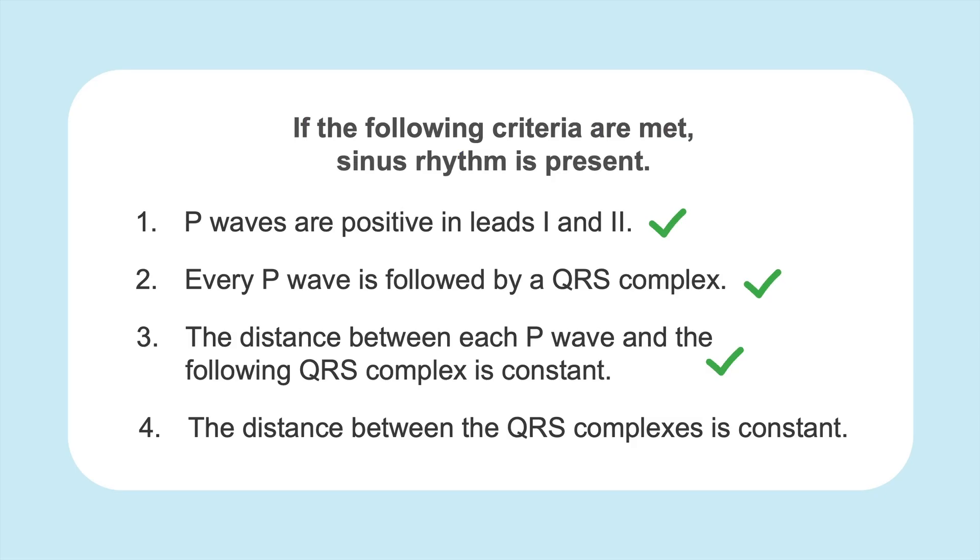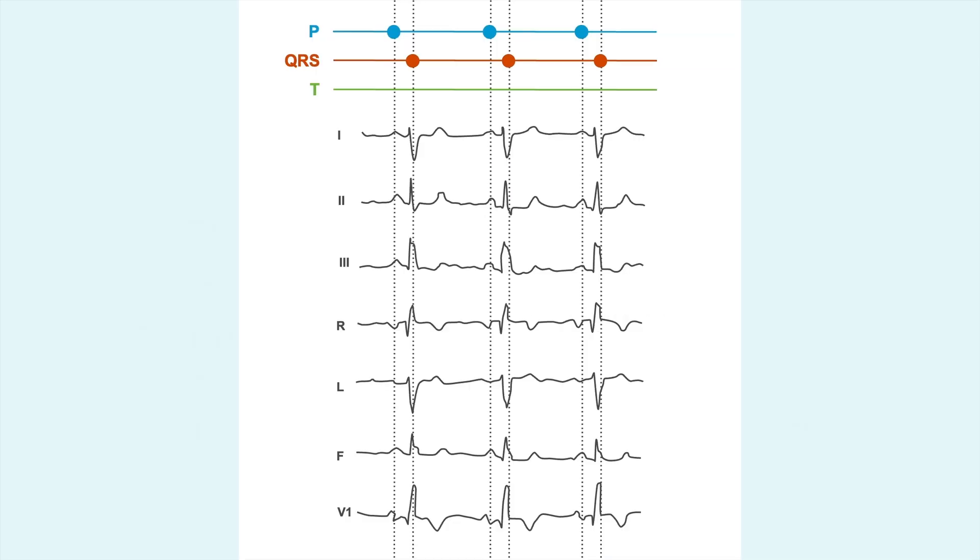And number four, the distance between the QRS complexes is constant. So the distance from here to here is the same as from here to here. Our conclusion is that this has to be sinus rhythm.